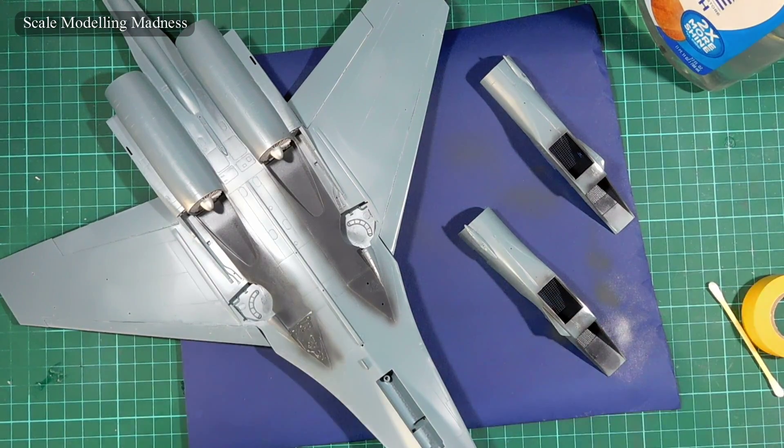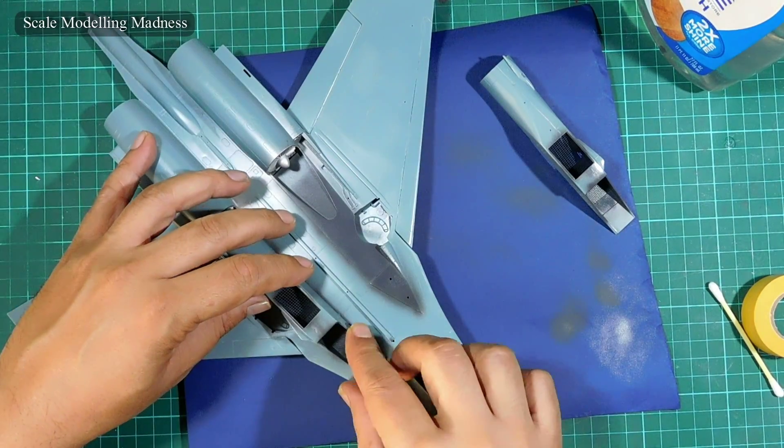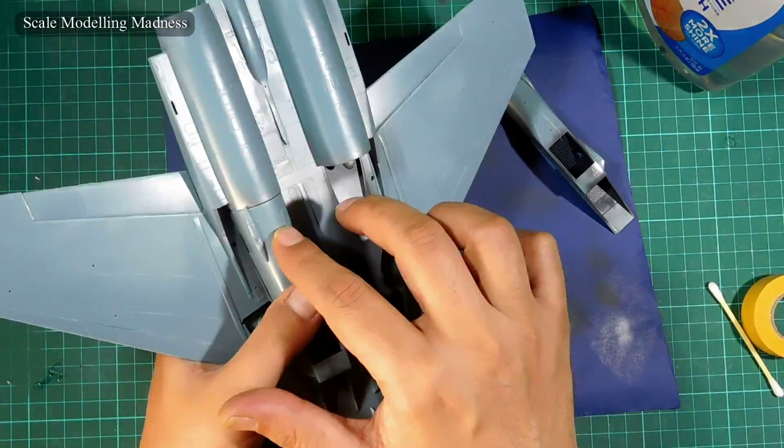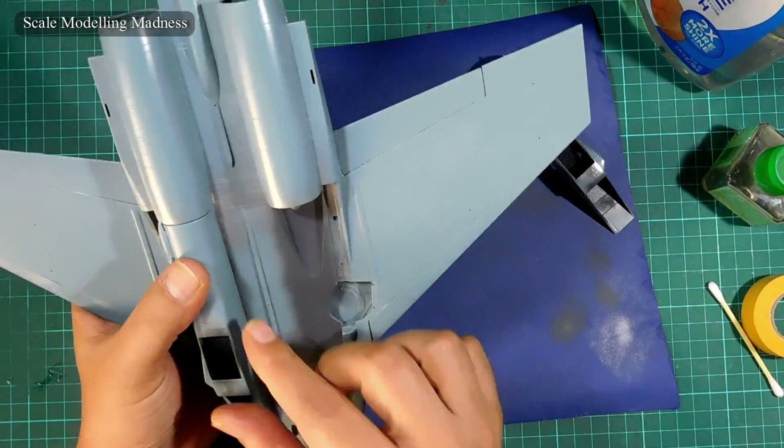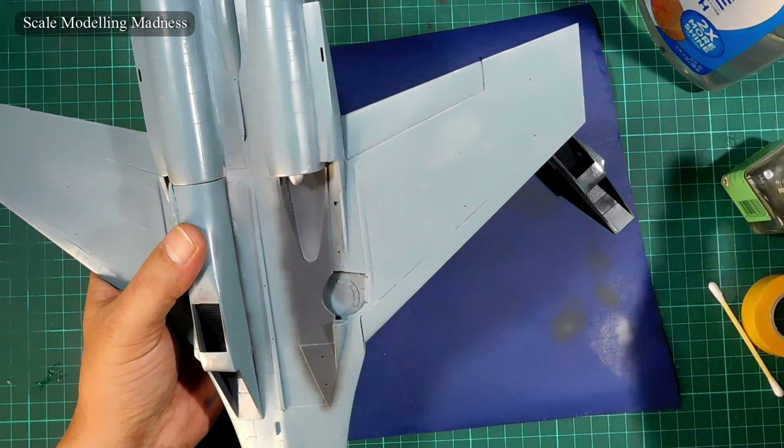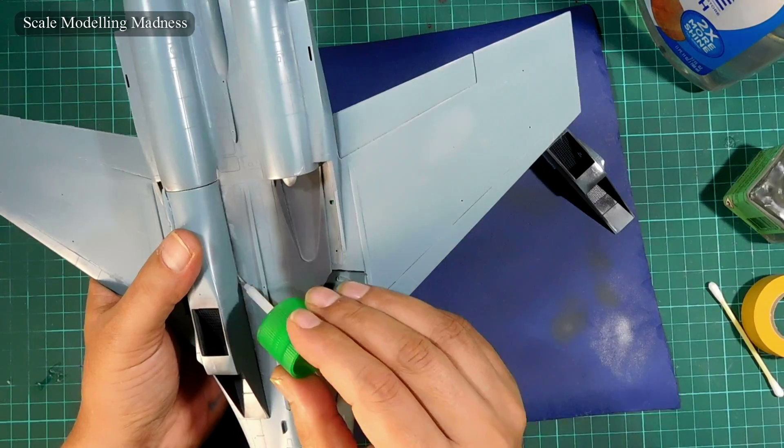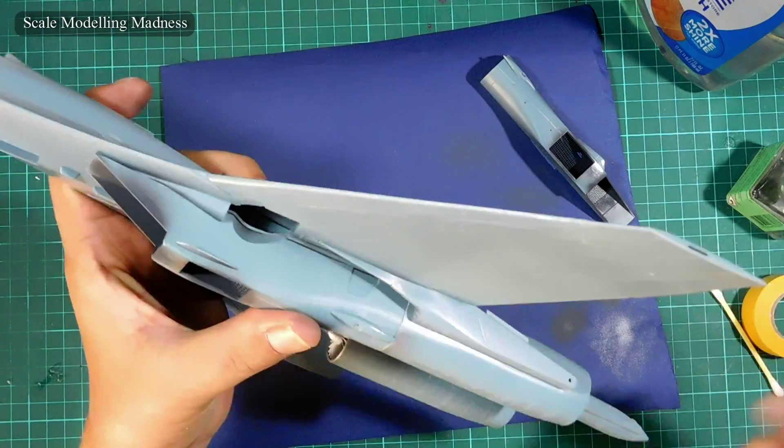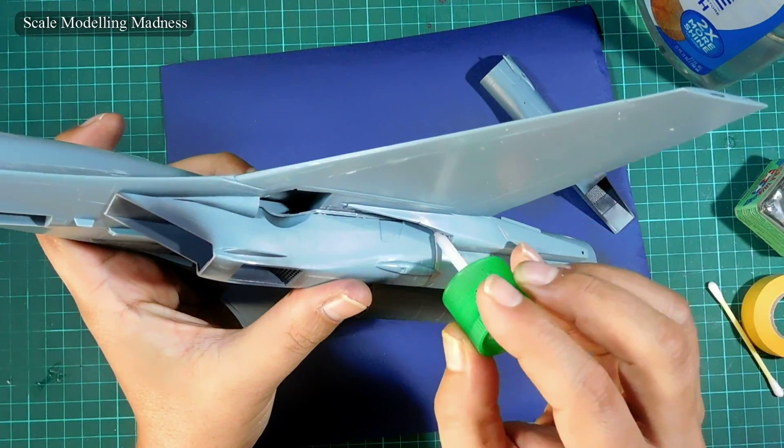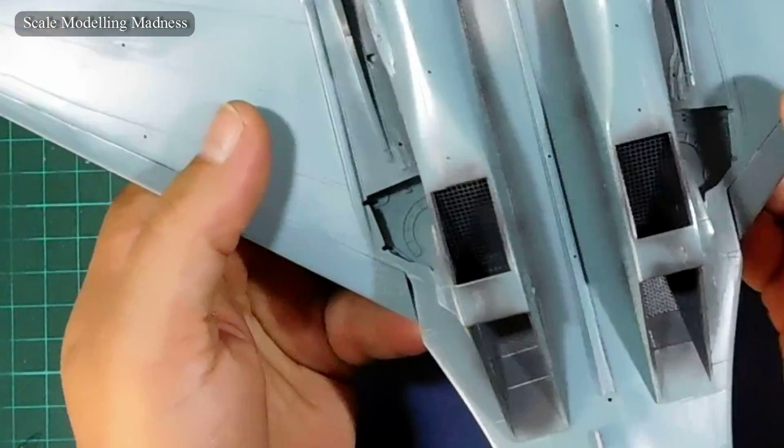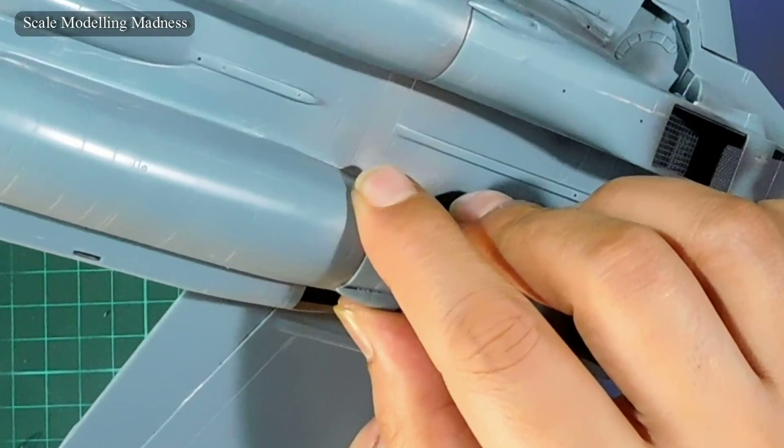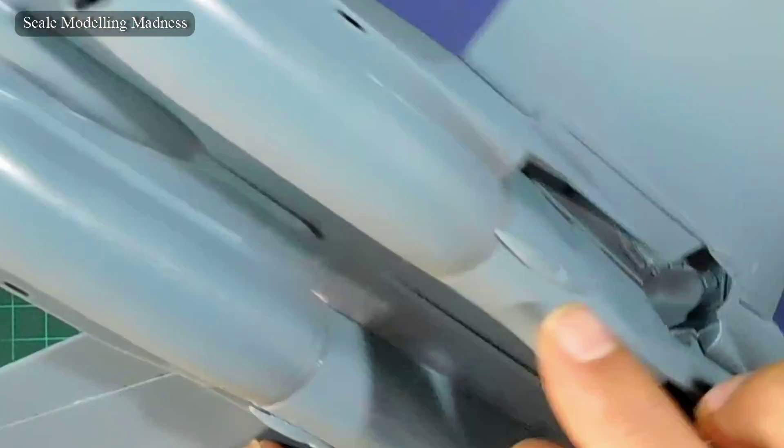Once the paint is dry, I glue the intakes in place. There is a gap between the intake and the fuselage, but I don't think it will be too hard to fill later with some putty.